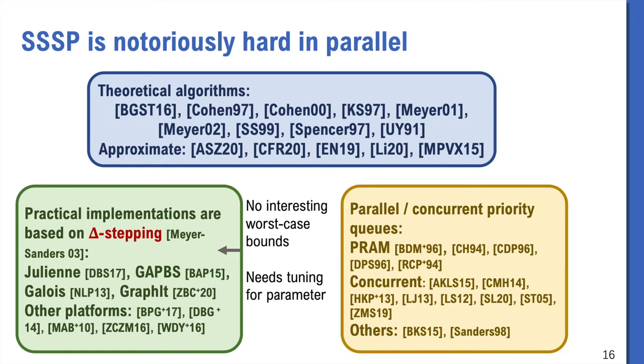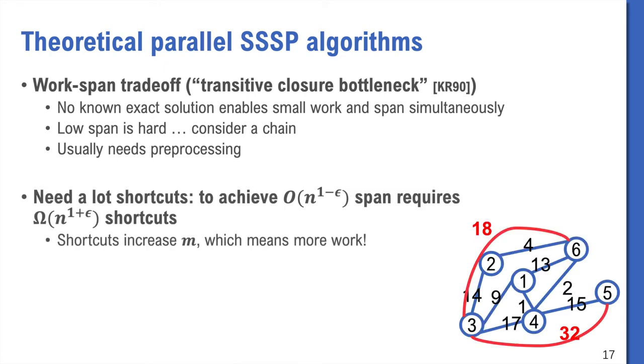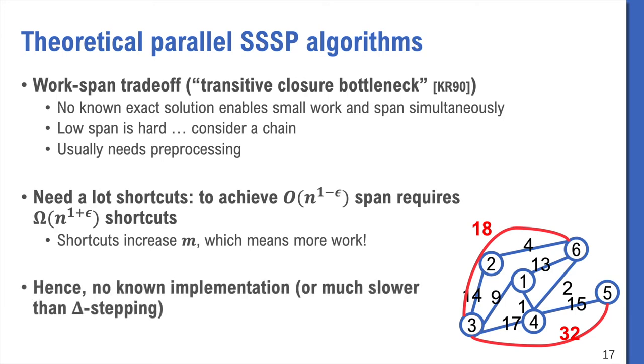If we zoom in at the theoretically-efficient algorithms, it's also very challenging. Because parallel SSSP is one of the problems that is hypothesized to suffer from the transitive closure bottleneck, no known solution can achieve low work and span simultaneously. Low span is especially hard, just consider a chain. So many theoretically-efficient algorithms need to add short-cut edges. Unfortunately, this is also hard. Theoretically, we need many short-cut edges to reduce span. But adding these short-cuts increases the number of edges. So we have more work. And in practice, it's very hard to even store these short-cut edges in a single machine. Due to all these reasons, these algorithms are not very practical.